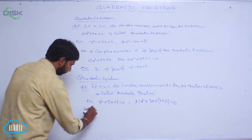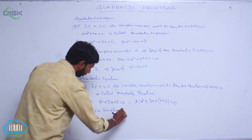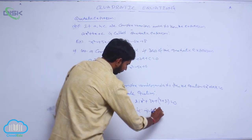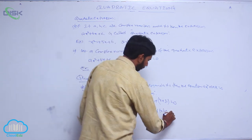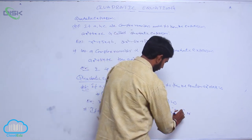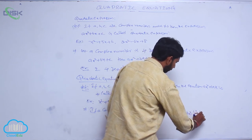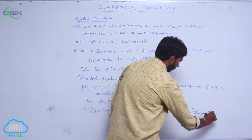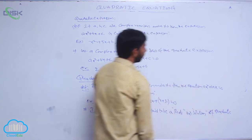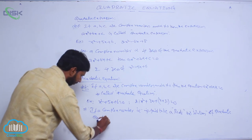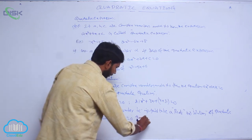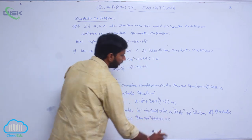If a complex number alpha is said to be a root or solution of the Quadratic Equation ax² + bx + c = 0, then a·alpha² + b·alpha + c = 0.